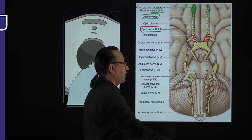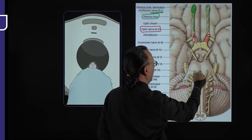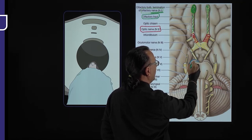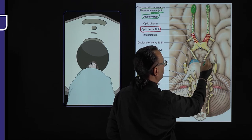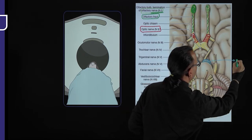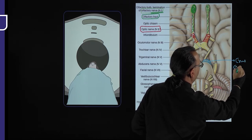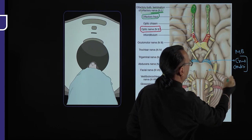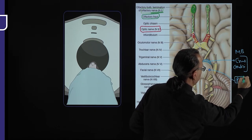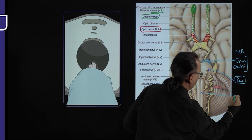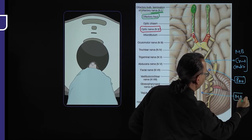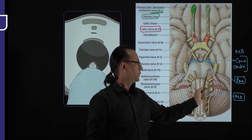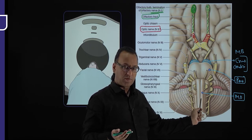Cranial nerves 3 to 12 come from the brainstem. The three components of the brainstem are visible here: the midbrain, the pons, and the medulla oblongata. The crus cerebri is a part of the midbrain that is evident here, followed below by the pons, and still inferior is the medulla oblongata.